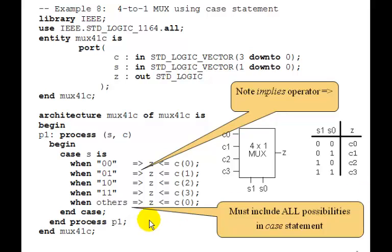Now, you'll notice that we end this case statement with when others implies Z gets C0. I could have put anything here, including the word null we sometimes use. But why do we put when others? Well, we must include all possibilities in the case statement.